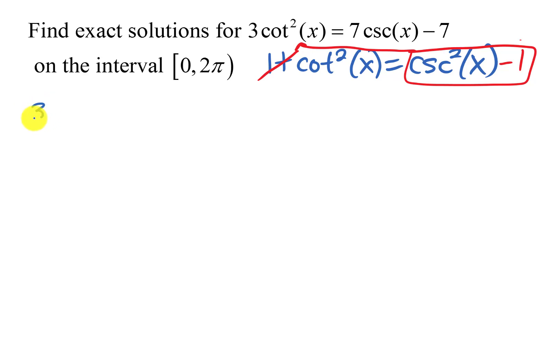So I'm going to do that. So I have 3 times cosecant squared x minus 1 equals 7 cosecant x minus 7. Now I like that because I have everything in terms of the same trig function.